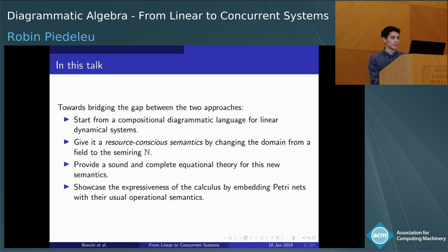The main result of our paper is to give a complete axiomatization for these semantics. And finally, we'll check that we land where we wanted by showing that Petri Nets embed naturally in this new language.